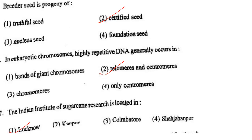Next one: Breeder seed is progeny of option 1, truthful seed; option 2, certified seed; option 3, nucleus seed; option 4, foundation seed. Answer is option 2: certified seed.